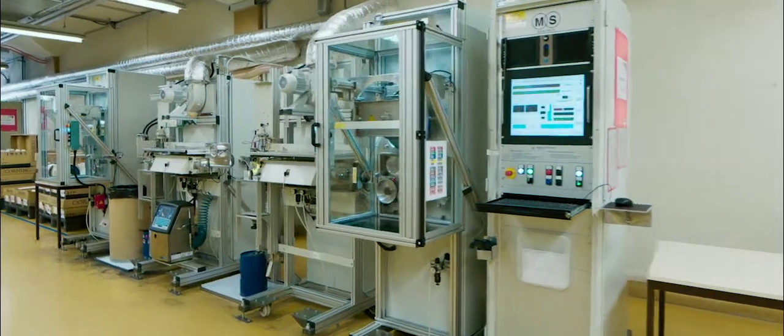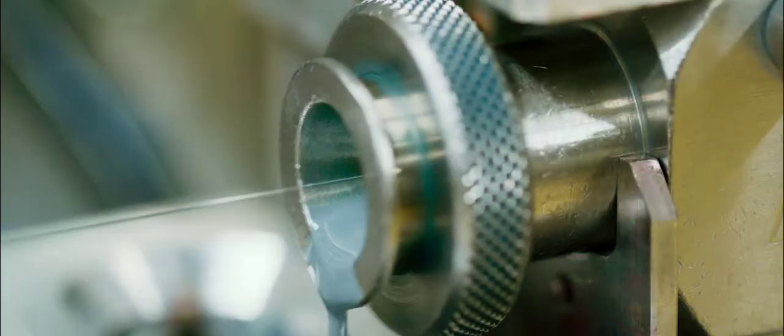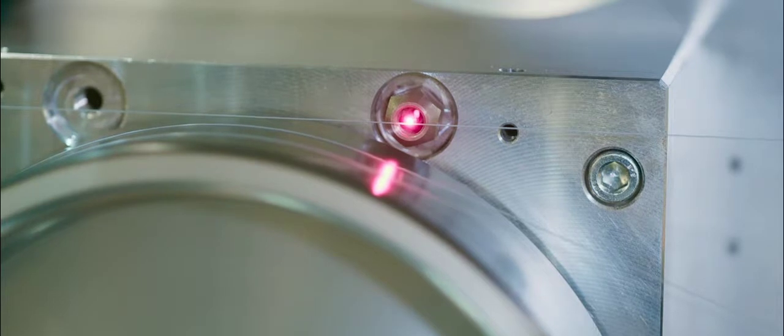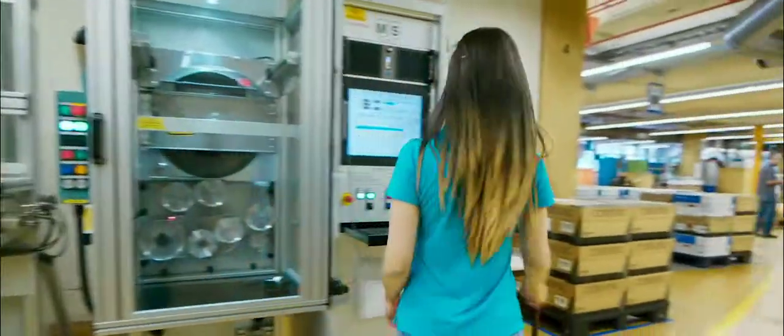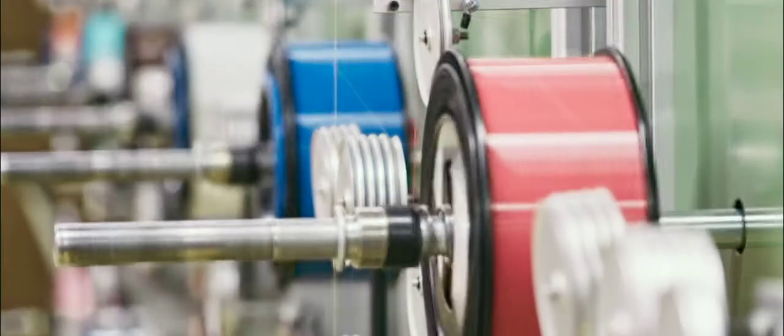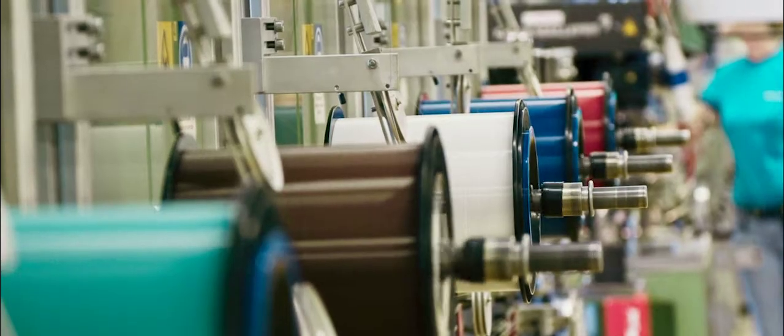During the production of our glass fiber data cables, the fibers are dyed with a colored layer. Yearly, 1 million kilometers of glass fibers are produced at 3,000 meters per minute.